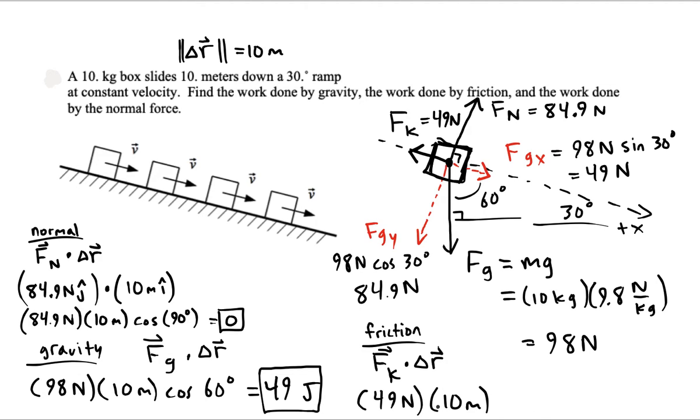And we always put positives in for the magnitudes but now we need cosine of an angle, and the cosine that we need to do is going to be for an angle of 180 degrees. Why? Because the box slides this way, that's your Δr, but friction is always against motion. And so friction always does negative work is what ends up happening.